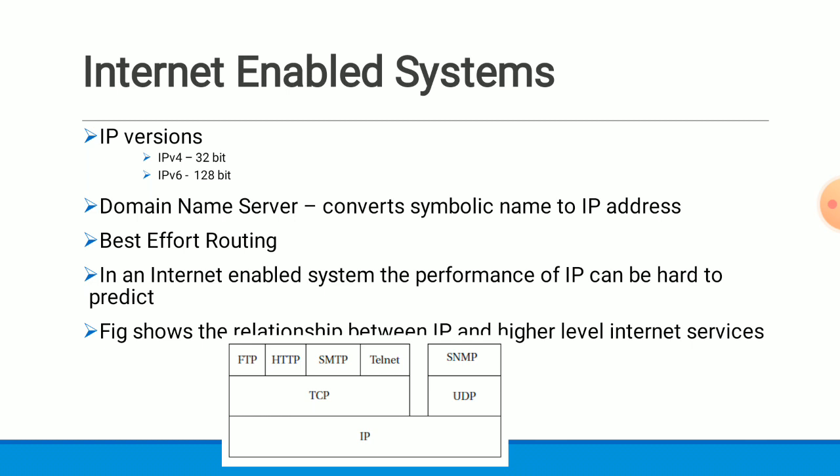We usually refer to an internet node by specifying its symbolic name rather than its IP address, for example www.abc.com. A domain name server converts this symbolic name to the corresponding IP address.